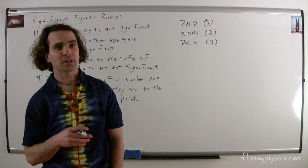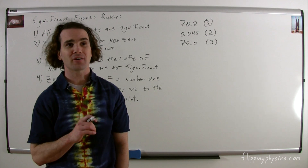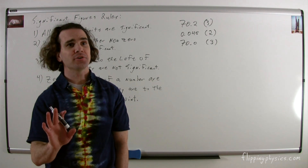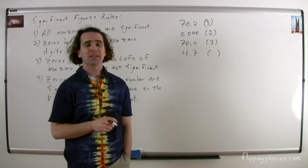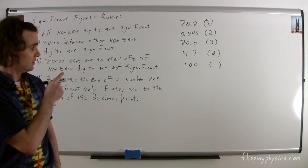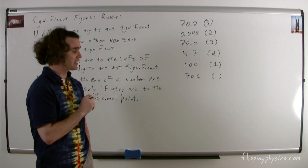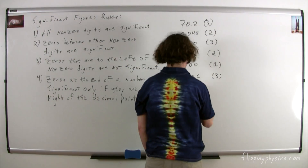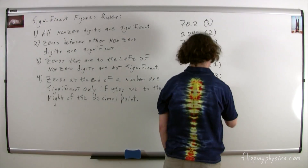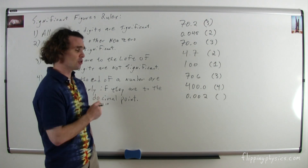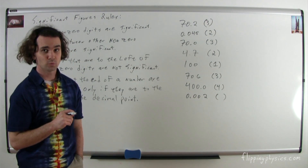Now I'm going to put numbers on the board and call on individuals to tell me how many significant figures are in each number. If you do not understand an answer, it is your responsibility to ask. Billy, 4.7. Two. Bo, 100. One. Bobby, 706. Three. Bo, 400.0. Four.